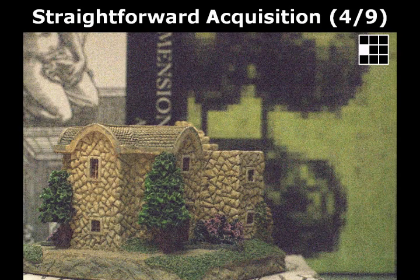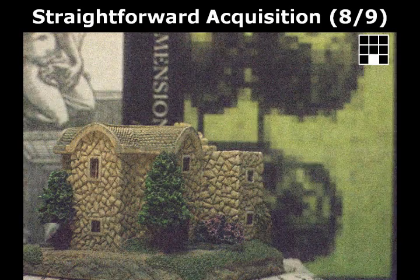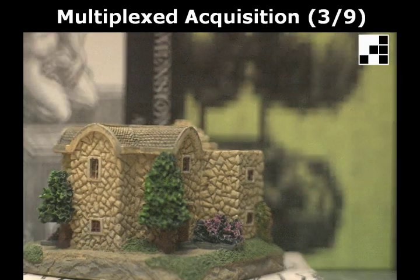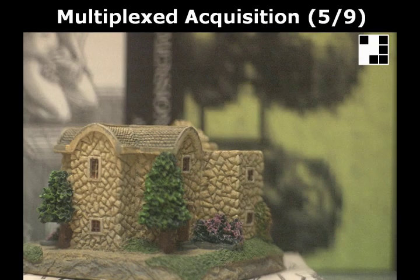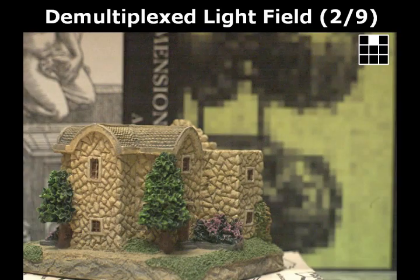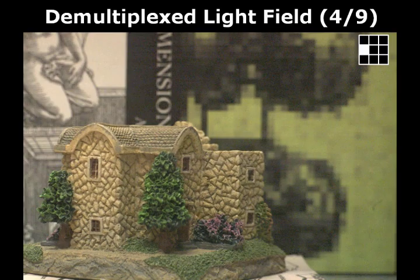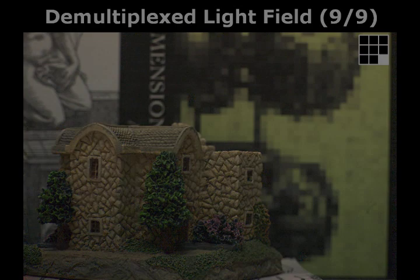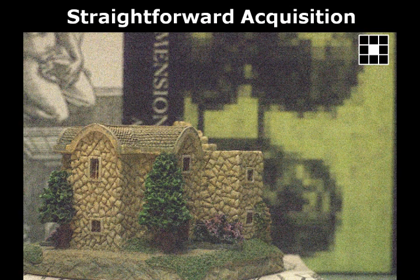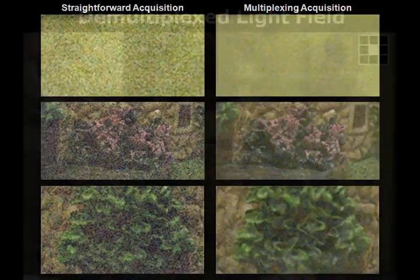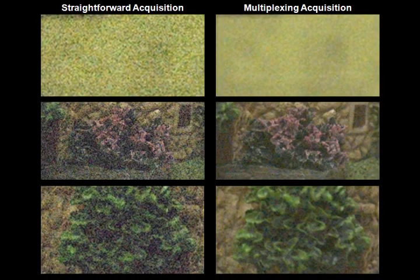Let's see an example. These are 9 light field images captured without multiplexing, and these are 9 multiplexed images. The shutter speed is the same as that in the straightforward acquisition. From these 9 multiplexed images, we can obtain the light field images by demultiplexing. This is the light field image using straightforward acquisition, and this is the light field image obtained from multiplexing acquisition. This is a side-by-side comparison.